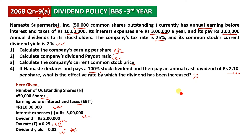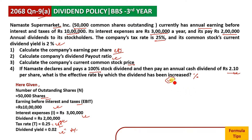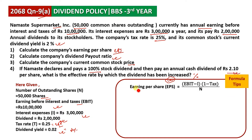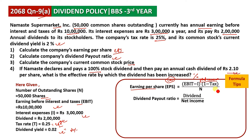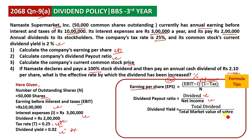The dividend policy formulas are: earnings per share (EPS) equals net income divided by number of shares. Net income is calculated as EBIT minus interest. The dividend payout ratio is dividends divided by net income. Dividend yield equals total dividends divided by total market value of shares.